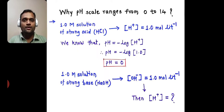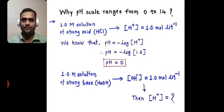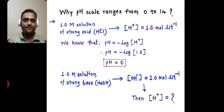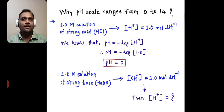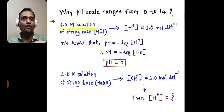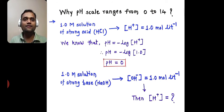One question arises: why does the pH scale range from 0 to 14? It is well known that the minimum value of pH is 0 and the maximum is 14, so the overall pH scale ranges from 0 to 14. To answer why, we first consider one extreme: a 1 molar solution of a strong acid. For example, HCl. HCl is a strong acid, and if we take its 1 molar solution, in that solution it undergoes ionization to form H⁺ and Cl⁻.